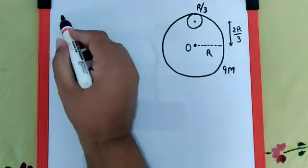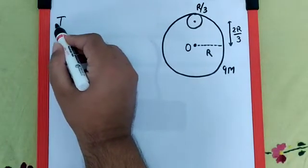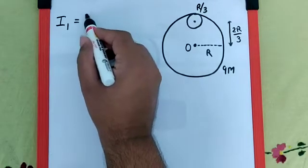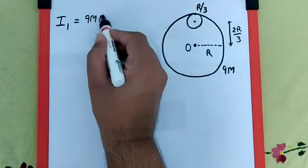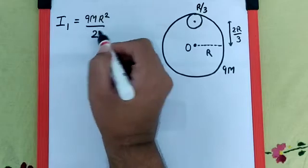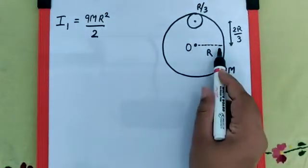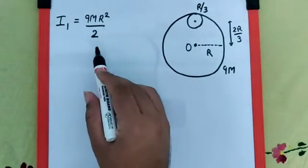I can say, let's say the moment of inertia of the original disk is I₁, which is definitely 9mr²/2. So 9m is the mass of the disk, r is the radius, and mr²/2 is the general formula for it.